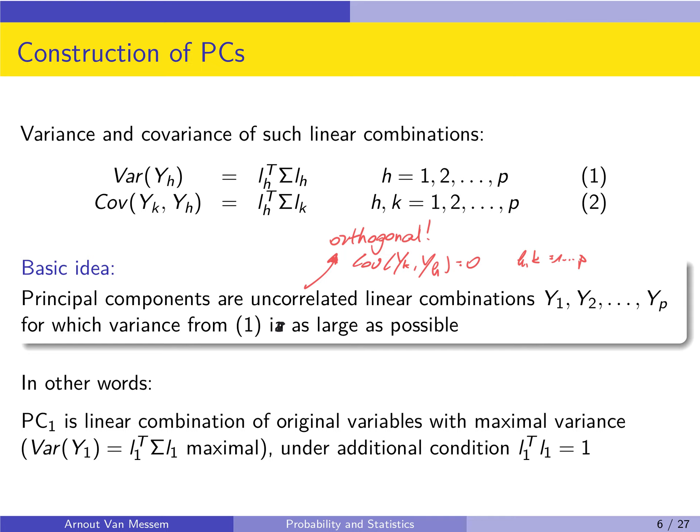The second assumption in principal component analysis is that the variance will be as large as possible when constructing those principal components. We look for PC1 as a linear combination of x1 to xp with the largest variance possible, so the variance of y1 = l1 transpose sigma l1 is maximal. However, this problem does not have a unique solution, so we impose an additional normalizing condition: l1 transpose times l1 equals 1. This normalizing condition ensures the solution is unique.